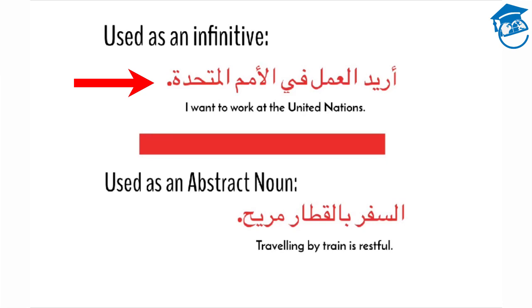In the second example, where we're using it as an abstract noun, we have the sentence: Al-safir bil qatar murihah. Al-safir bil qatar murihah means traveling by train is restful. In this example, al-safir is a masdar or verbal noun, and it is used as a gerund.